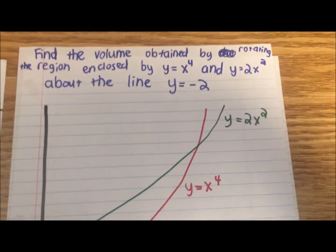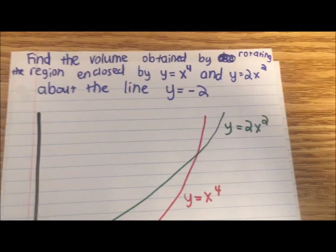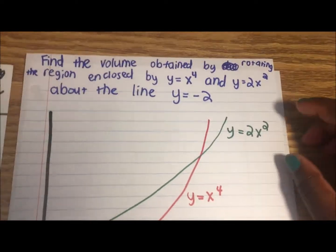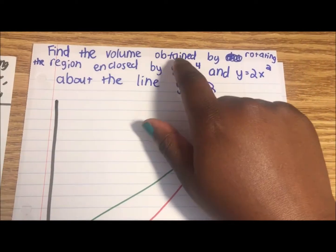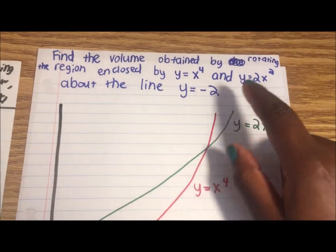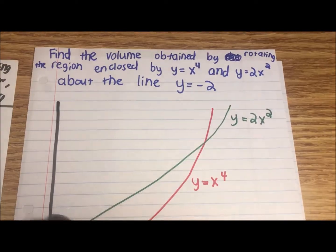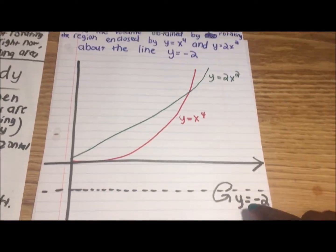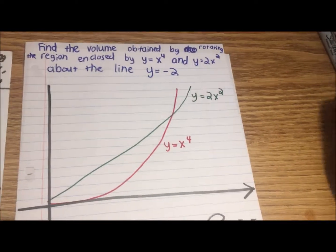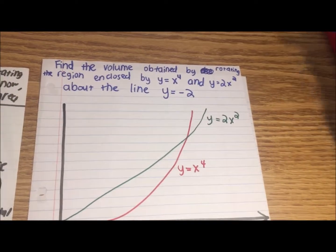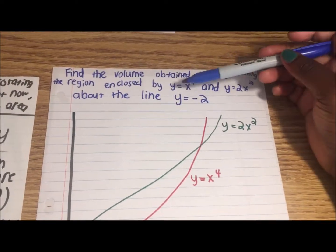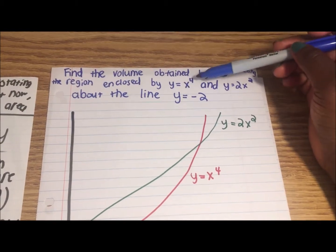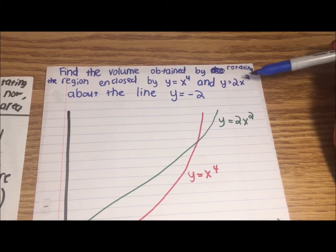Here's an example problem. It says: find the volume obtained by rotating the region enclosed by y equals x to the 4th — that's this line — and y equals 2x squared — that's this line — about the line y equals negative 2, which is right here. Since the equations are y equals something in terms of x, that means we use a vertical strip.